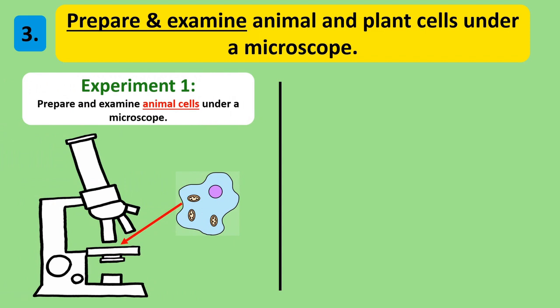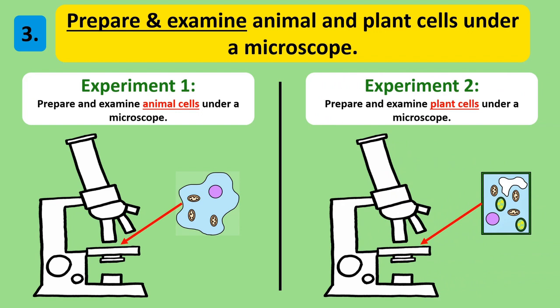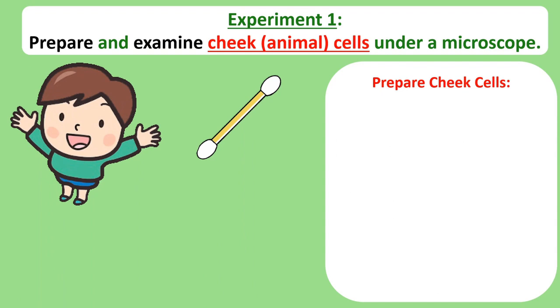In the first experiment, you will be collecting and examining animal cells, and in the second experiment, you will be collecting and examining plant cells. So let's begin with the experiment to collect and examine animal cells.